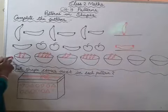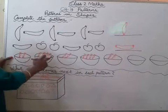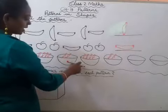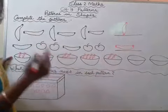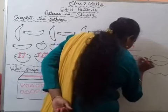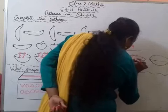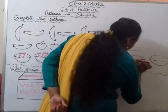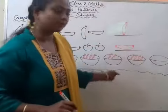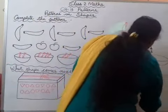In a bowl — first bowl mein two chocolates hain. Second bowl mein four chocolates. Third bowl — again two chocolates. Fourth bowl — four chocolates. Then two chocolates, then uske baad four chocolates hai ga. So you have to draw four chocolates. I have drawn four chocolates. What will be the next one? Again two chocolates will be there.